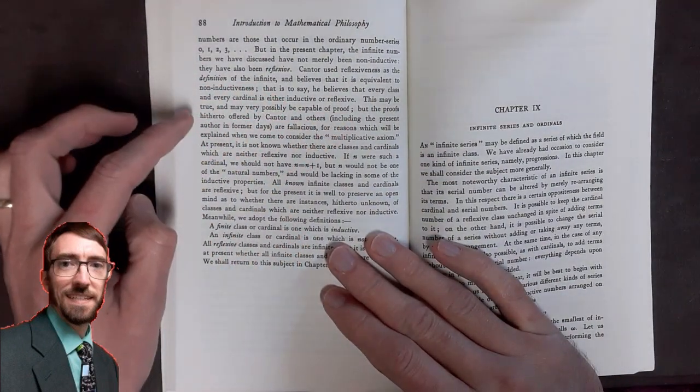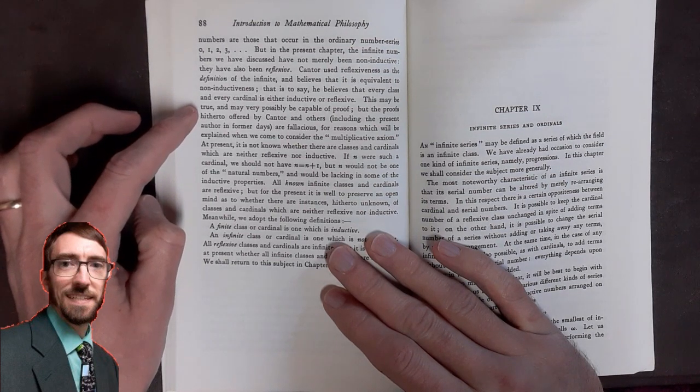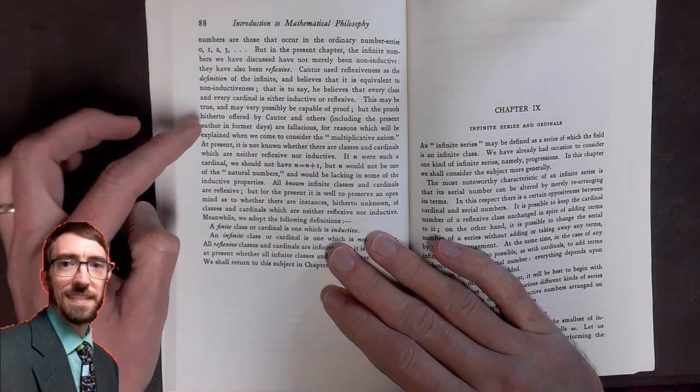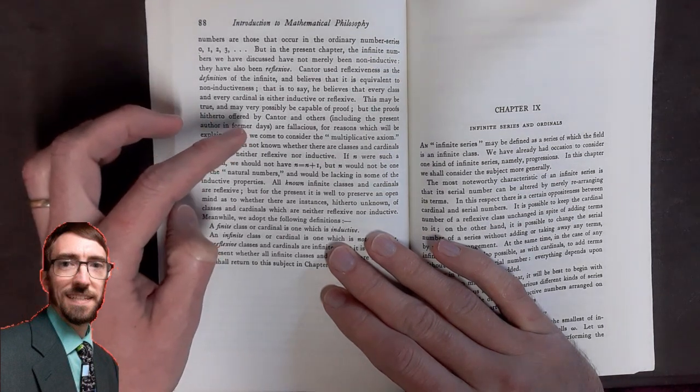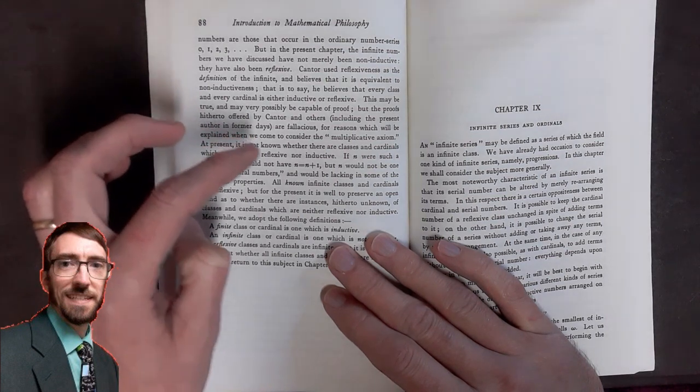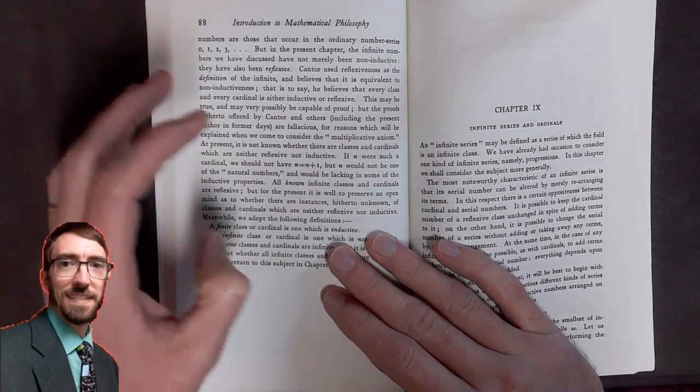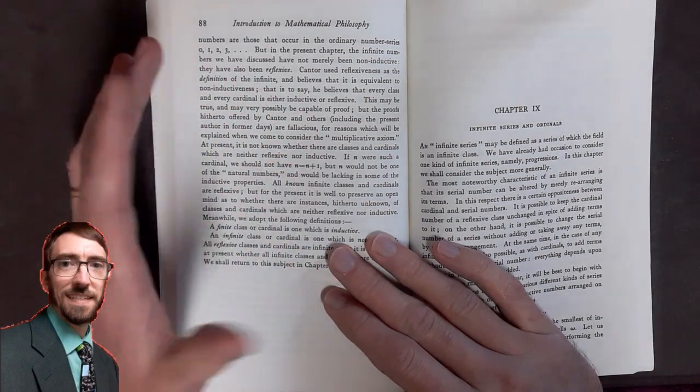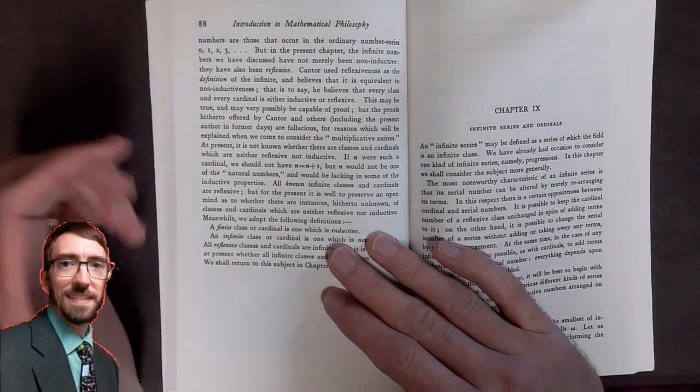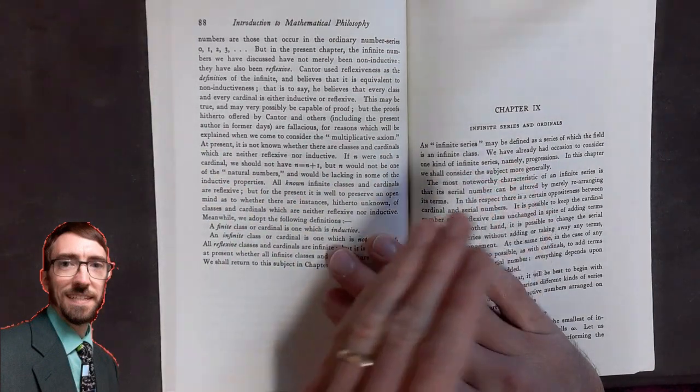We have this statement by Russell here saying, but the proofs hitherto offered by Cantor and others, including the present author in former days, are fallacious, for reasons which will be explained when we come to consider the multiplicative axiom. So he talks about proofs in the past having some errors in them, including his own proofs, and he talks about the multiplicative axiom, and this comes up later.